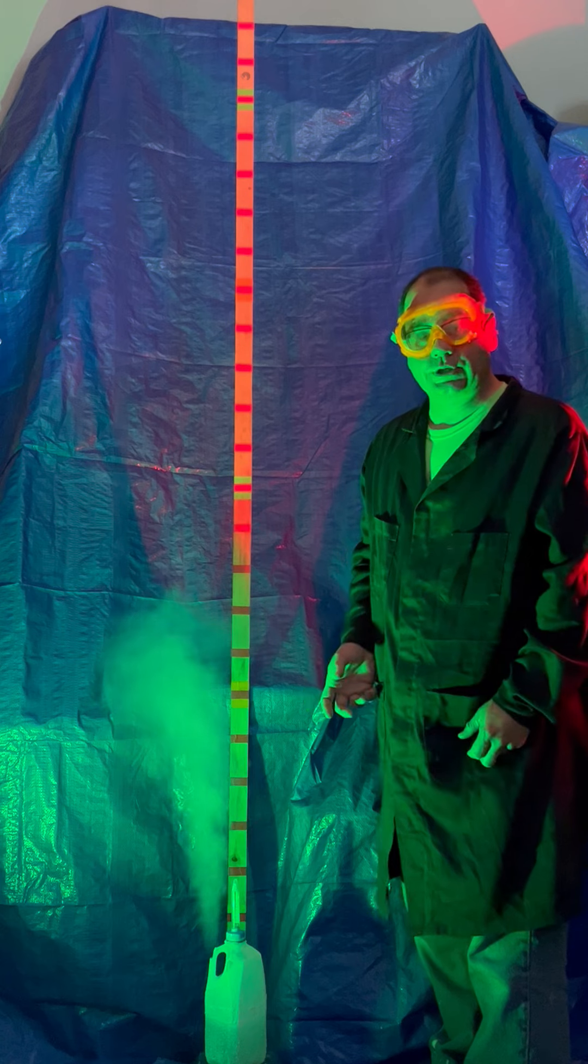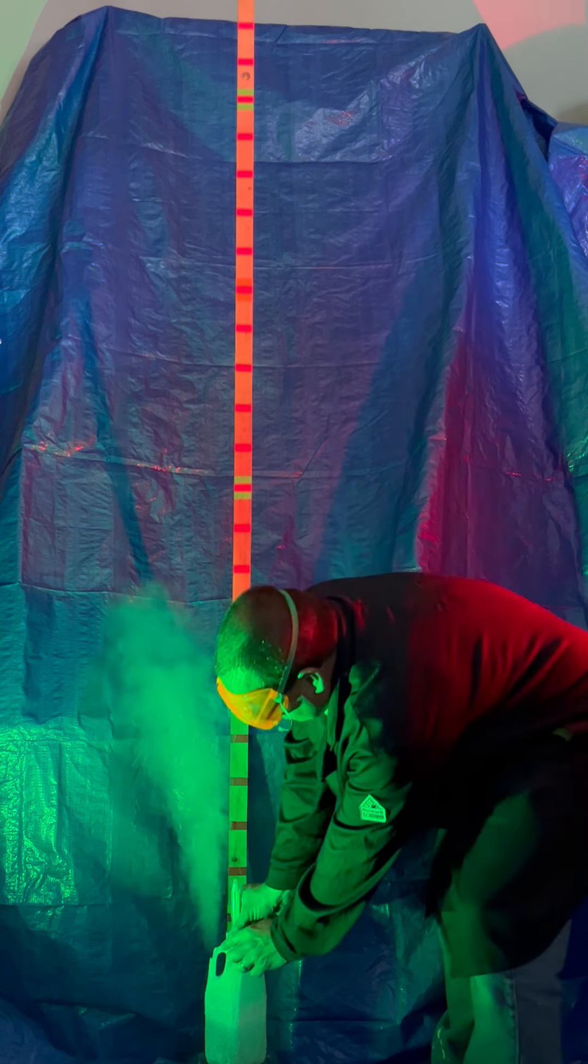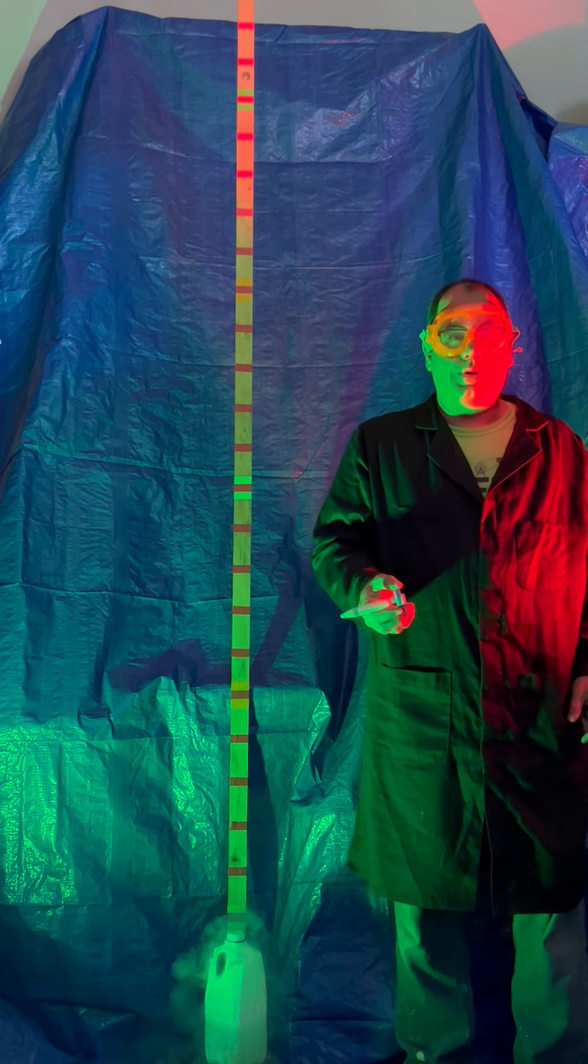But we can change the surface area of the iron. So instead of adding iron spheres, what we can do is add iron powder, which has much greater surface area per mass.